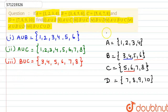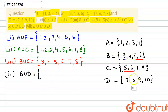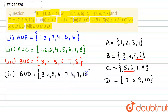Now, for the fourth part, we have to find out B union D. We can see that no two elements are common in these two sets. So we can directly write {3, 4, 5, 6, 7, 8, 9, 10}. This is B union D.